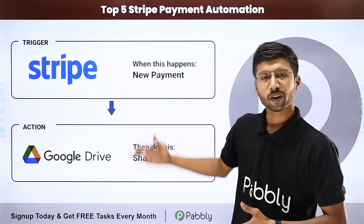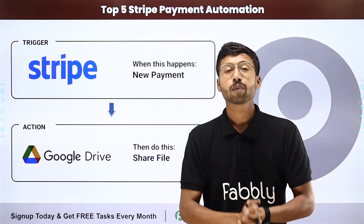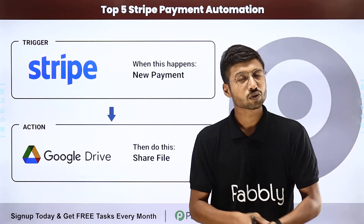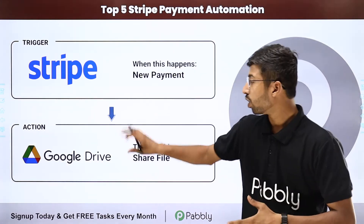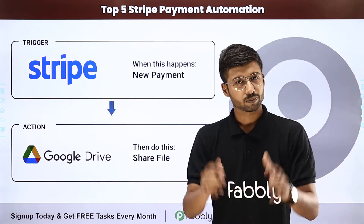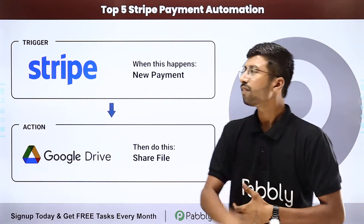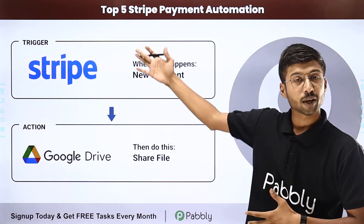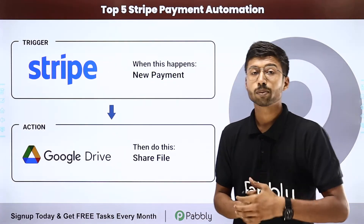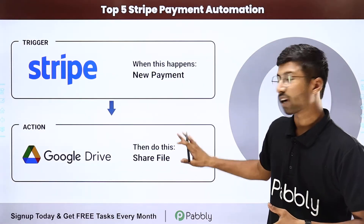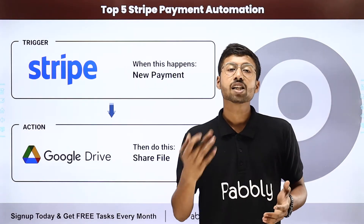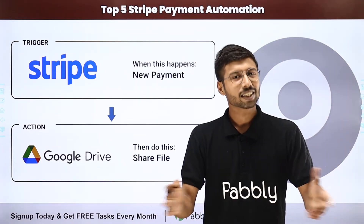Our first automation is Stripe to Google Drive. Suppose you are selling some kind of course or digital product online and you have that file on your Google Drive, and you are using Stripe to collect payments from your customers. Using this automation, whenever you receive a new payment on your Stripe account, the file will automatically be delivered to the customer who made the payment — instantly. You receive the payment and automatically the file is delivered to your customer.